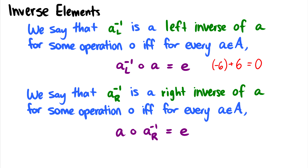Much like identities have left and right versions, inverses also have left and right inverses. For the right inverse with addition: if we have six plus something equals zero, what takes us back to the identity? That would also be negative six. So negative six is a right inverse of six for addition under the real numbers or integers.